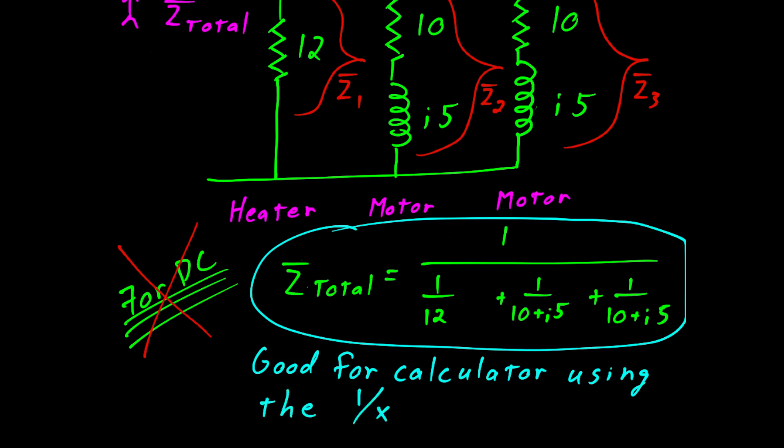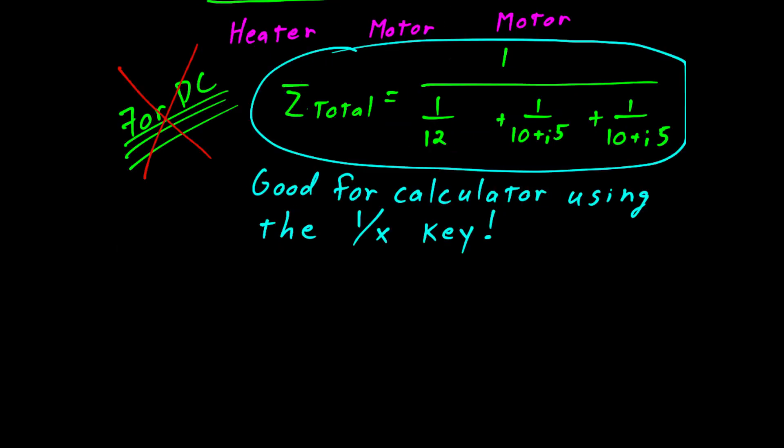But wait a minute. We have a word for 1 over impedance. And that is the admittance of a circuit, where the admittance of the circuit is equal to 1 over the impedance of the circuit. So you see 1 over 12 is an admittance. 1 over 10 plus J5 is an admittance.